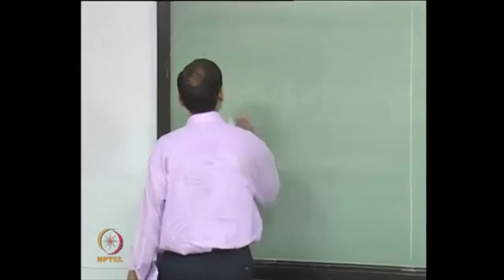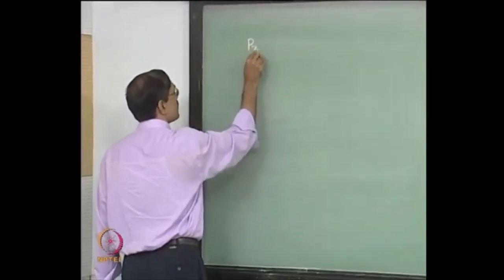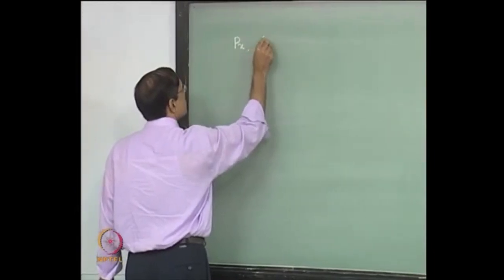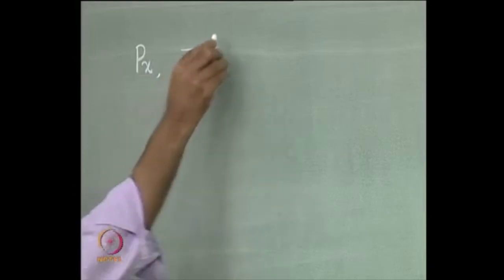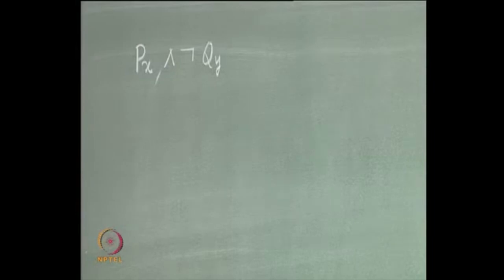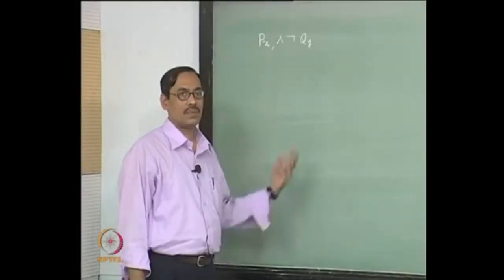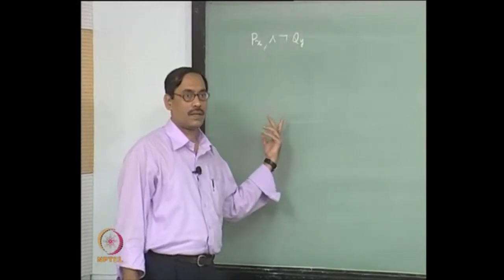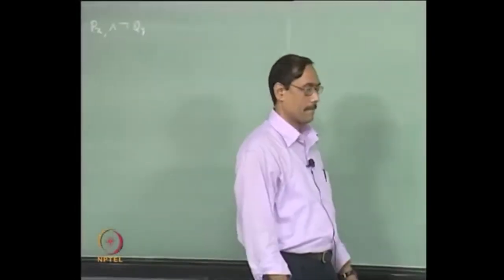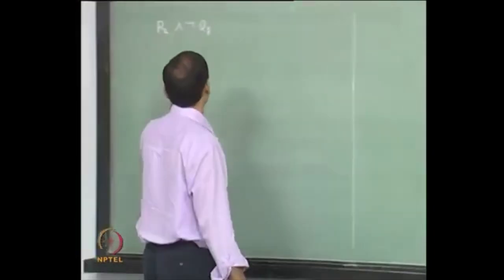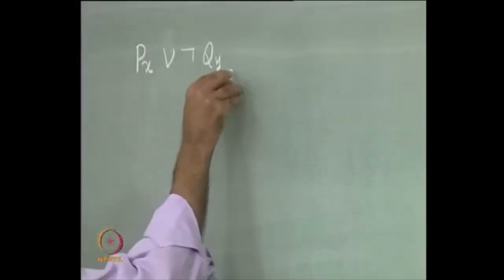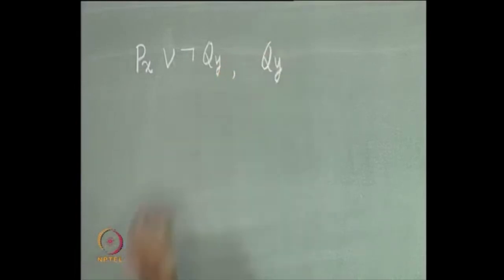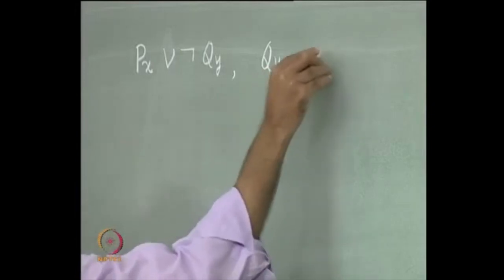Suppose we start with these clauses. I have one clause having p(x) and not q(x) or not q(y). This is one clause. The formula is in SCNF, so it will be written with AND of clauses, where each clause has OR. Let us take p(x) and not q(y), and we will take R here. Suppose I have another clause which is q(y) and another clause which is simply p(x).